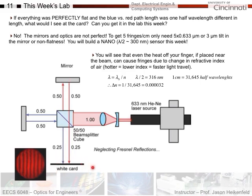At the white card, if you do this right and get the paths flat and lined up in distance, you'll start to see fringes. If the red path length is one half wavelength different compared to the blue path length — remembering these are the same laser light just drawn differently — then everything would be perfectly out of phase and you would see black at the card, no light.